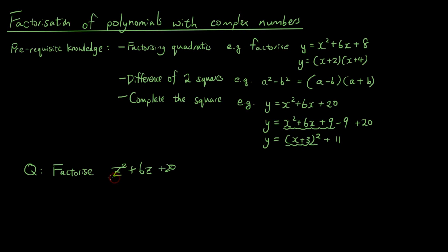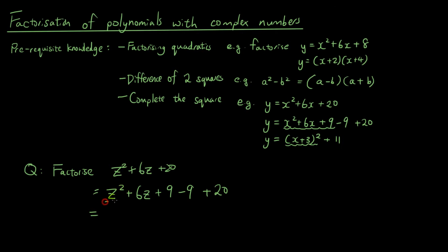So the question is: factorize z squared plus 6z plus 20. Because I have already summarized all the techniques you need to use, it actually becomes really easy. The first thing you're going to do is complete the square, making it z squared plus 6z plus 9 minus 9 plus 20. Factorizing that section using the completing the square technique gives z plus 3 squared, and then 20 minus 9 gives plus 11.